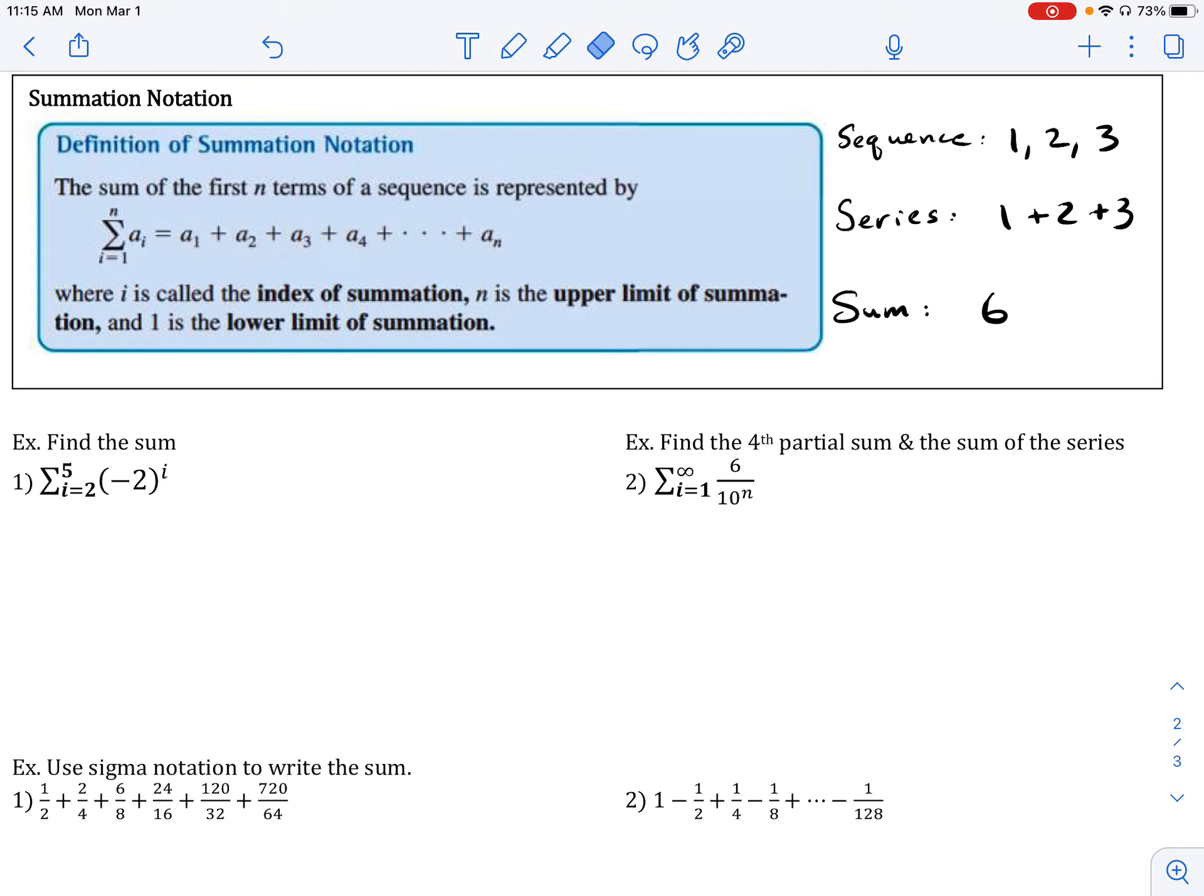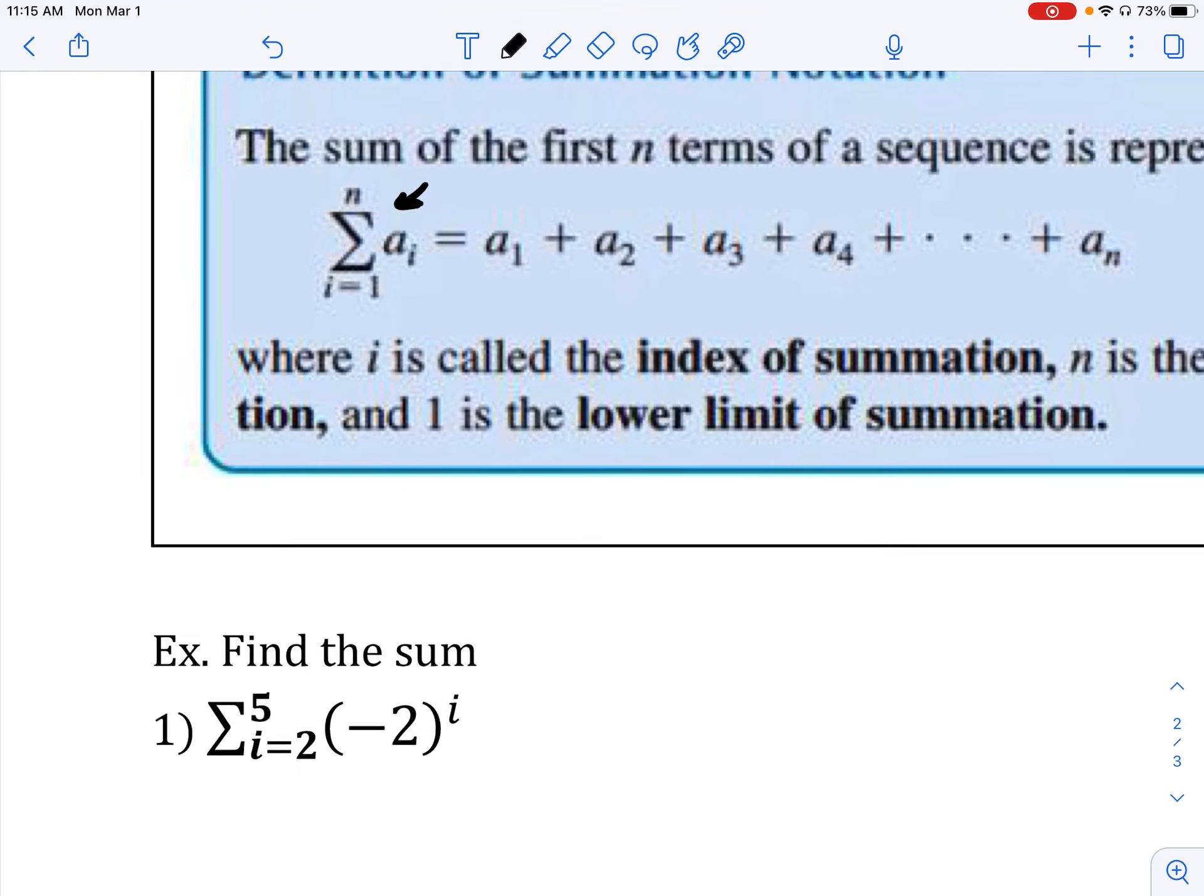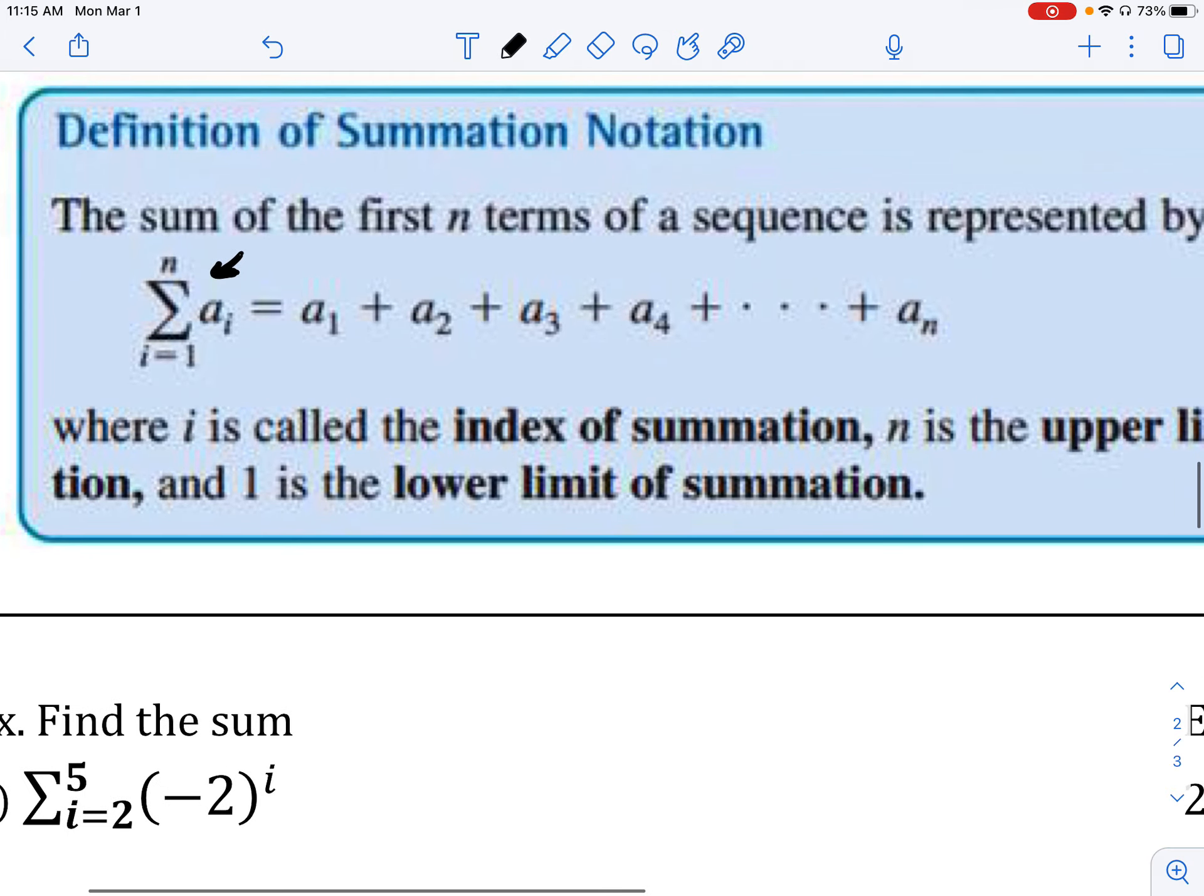Now, when we are dealing with series, it is often more efficient to work with something called summation notation or also sigma notation. It's also known as sigma notation because this letter that we're looking at here, this is known as the letter sigma in the Greek alphabet. But there's a couple things going on. So let's actually break it down. First off, we're saying this right here is called the index of summation. i is the index of summation. It is simply letting us know where to start in our series.